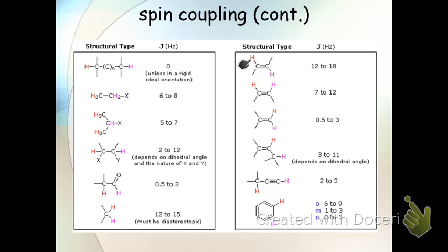And what you find for trans hydrogens is that the coupling constant tends to be from about 12 to 18 hertz. Now, if you remember, we typically do these measurements in parts per million.